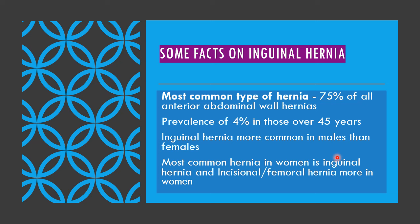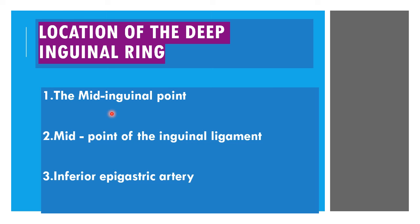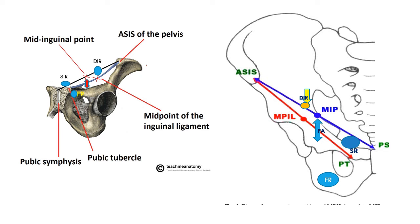In the examination of a patient with inguinal hernia, the location of the deep inguinal ring is a very important part. Three important landmarks should be taken into consideration: first, the mid-inguinal point; second, the midpoint of the inguinal ligament; and third, the inferior epigastric artery.